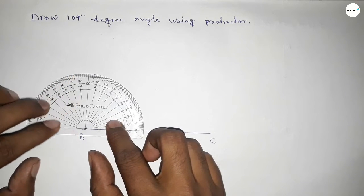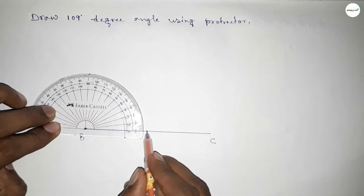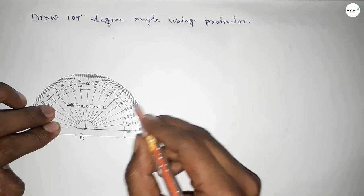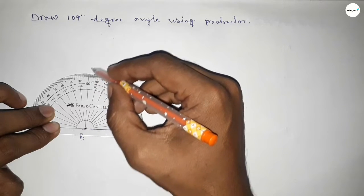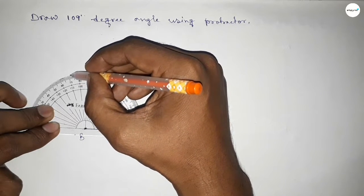So this is starting angle 0, 10, 20, 30, 40, 50, 60, 70, 80, 90, 100, 105, 106, 107, 108, 109. So this is 109 degrees.